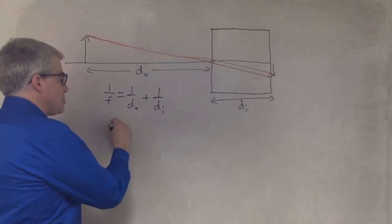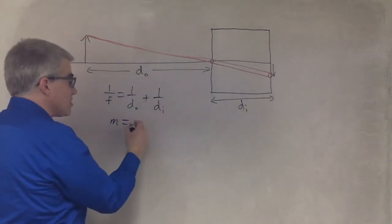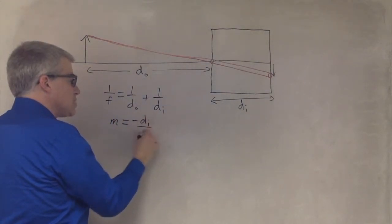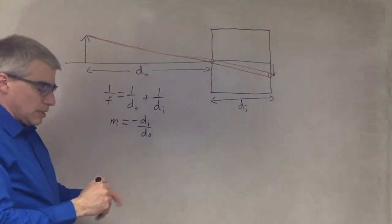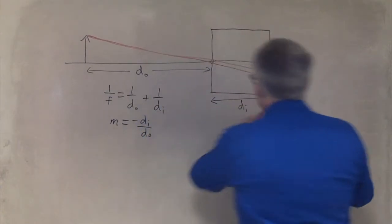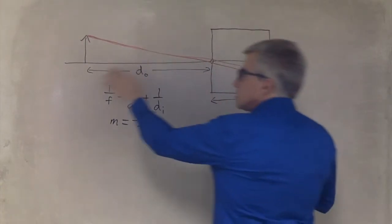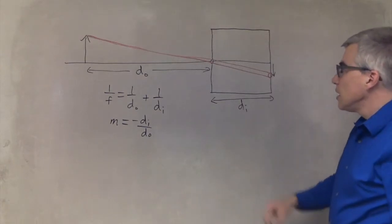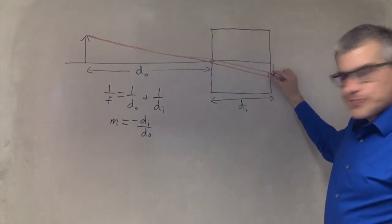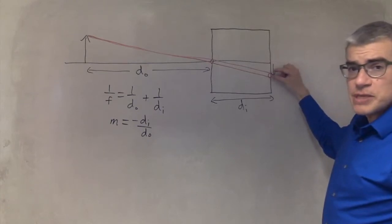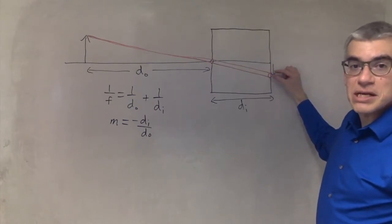And the magnification is, just by similar triangles, negative DI over DO, just as always. Now, because this distance is much larger than this one, this isn't going to widen out very much as it goes. So this circle is going to be almost the same size as the hole.